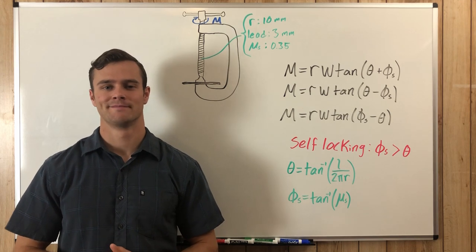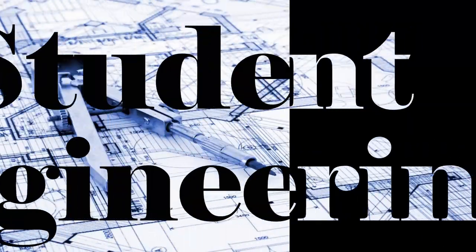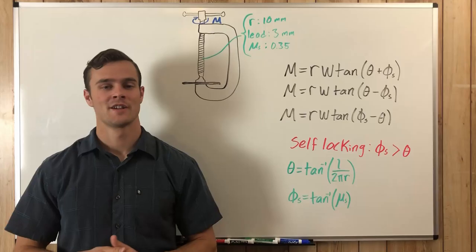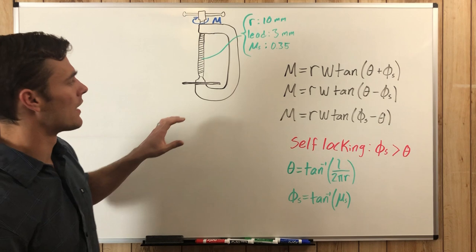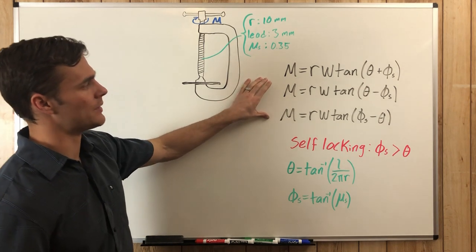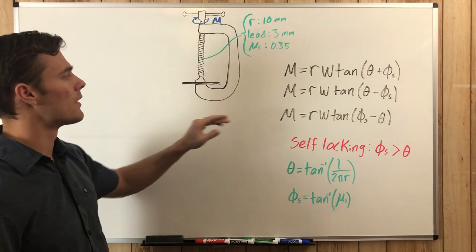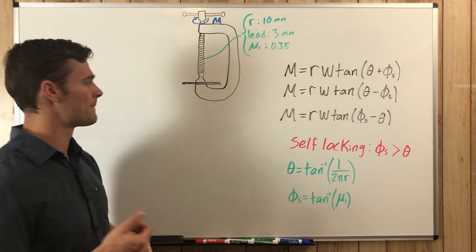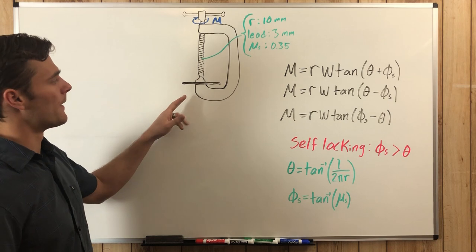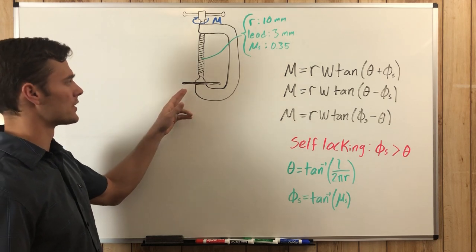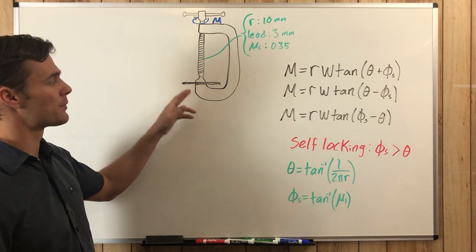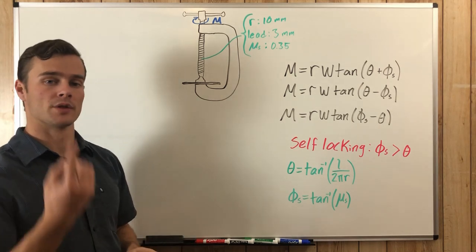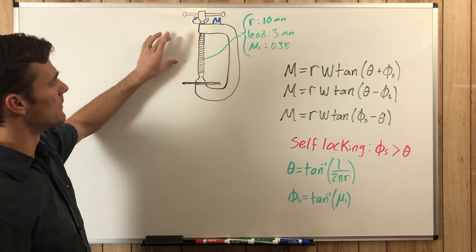So the first thing we need to do is figure out which one of these equations we need to use. We need to figure out in which direction this W is acting. We know that there needs to be a compression force of 50 newtons on this board, so this board is going to be pushing back with a force of 50 newtons. Then the impending motion for this screw, which is part of the clamp, is going to be downward so it can compress this board.